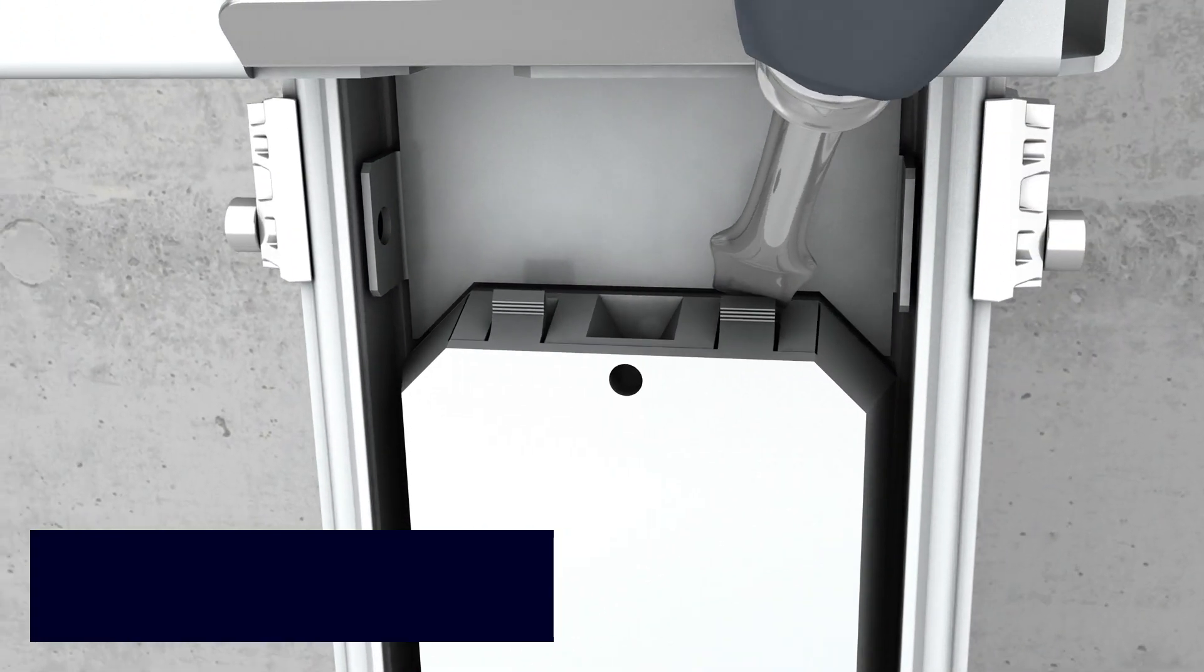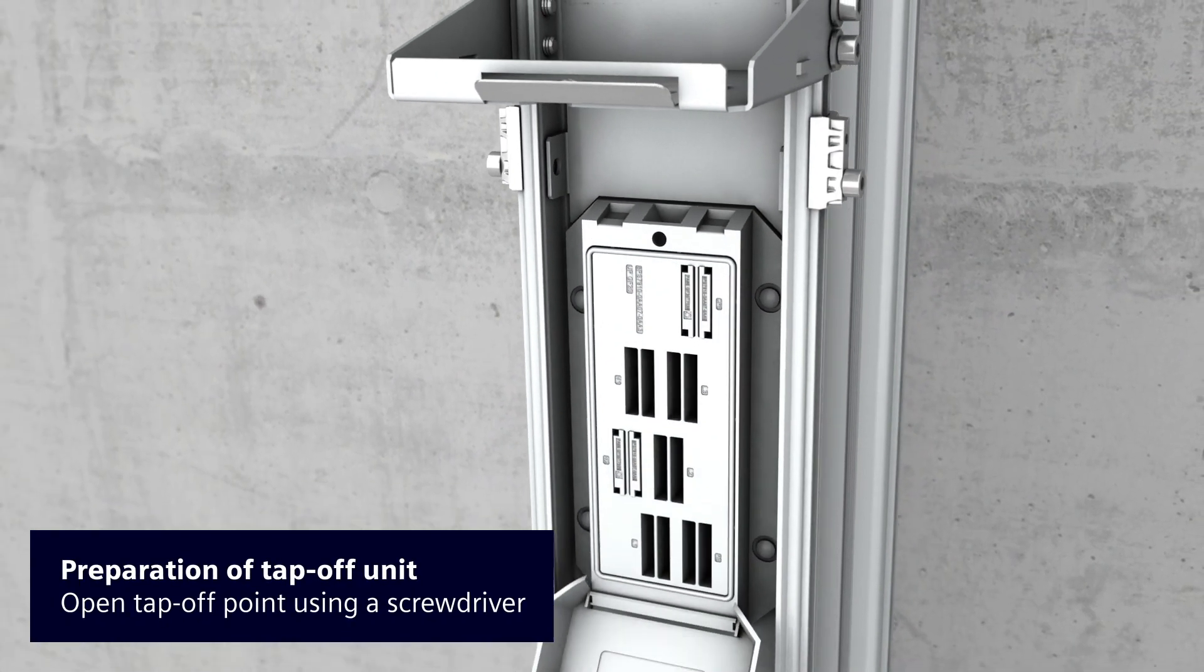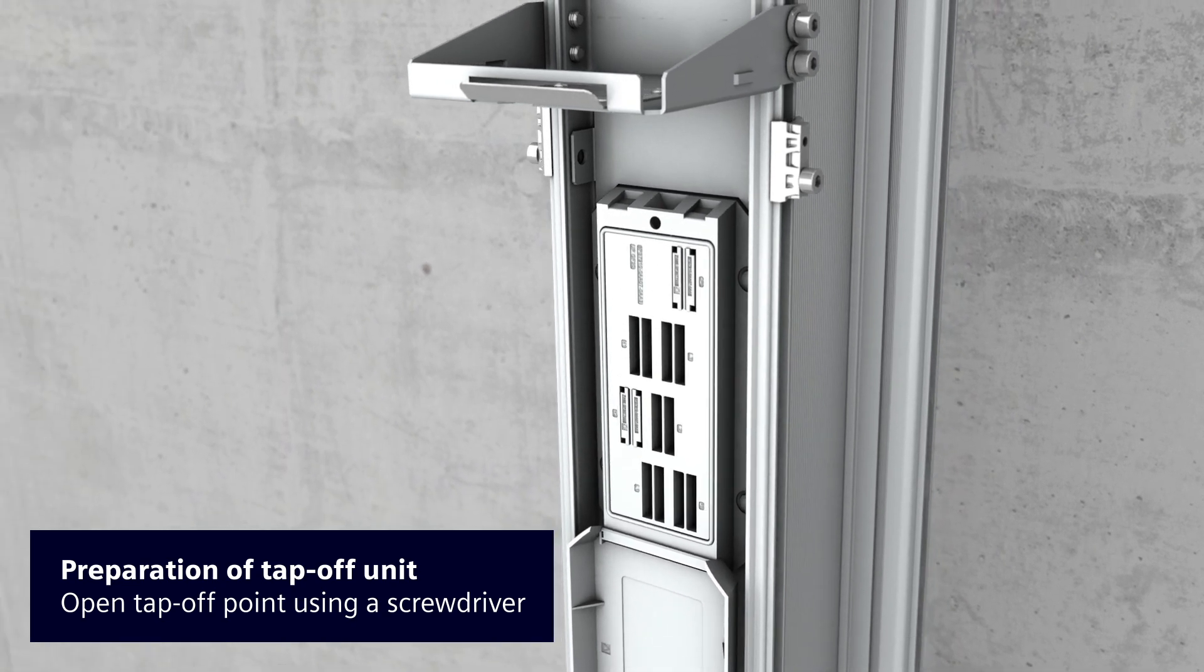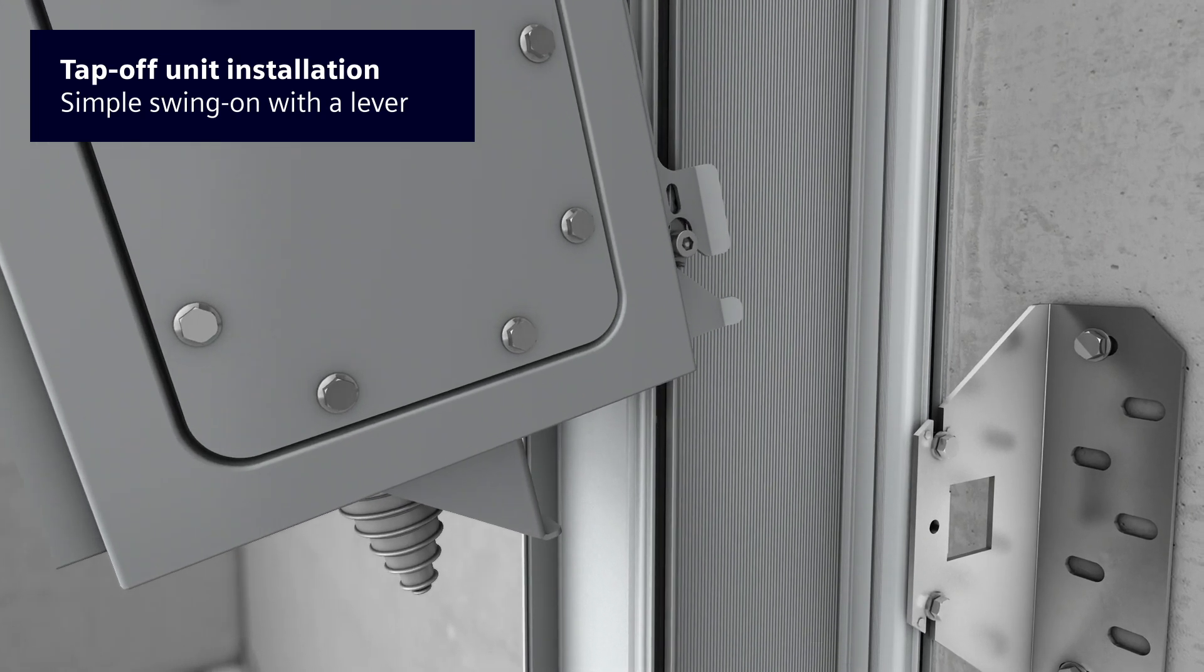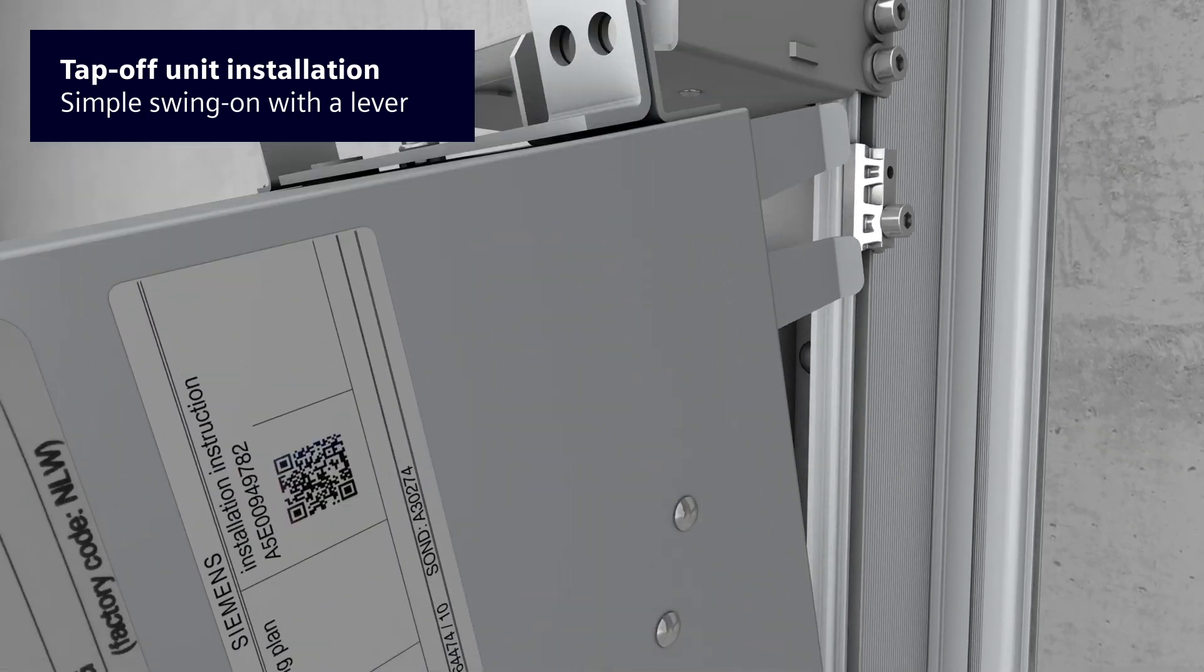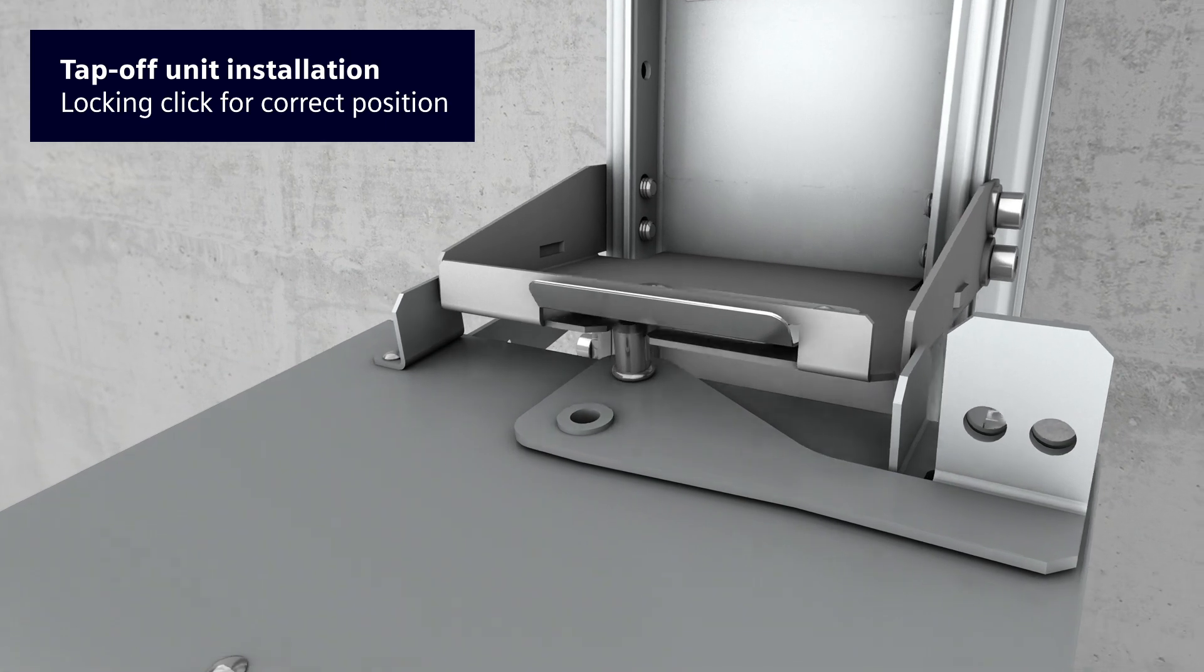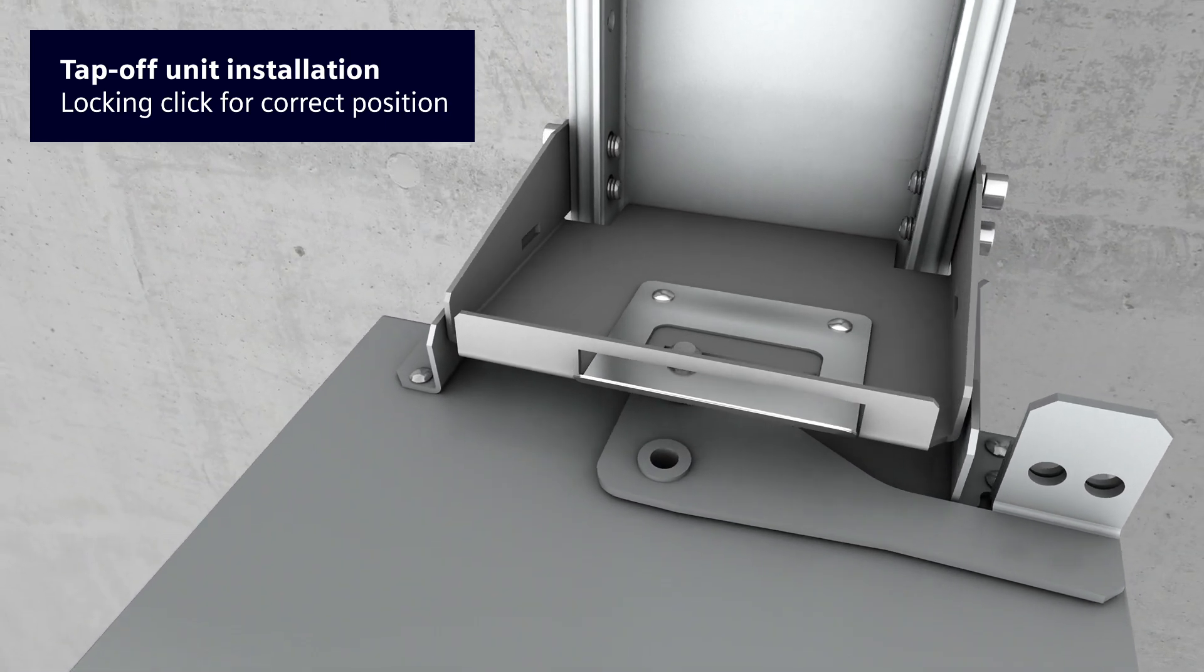Open the tap-off point before attaching the tap-off unit. The tap-off unit can now be plugged onto the bus bar system. Simply swivel the unit into position. An audible click will signal its correct position.